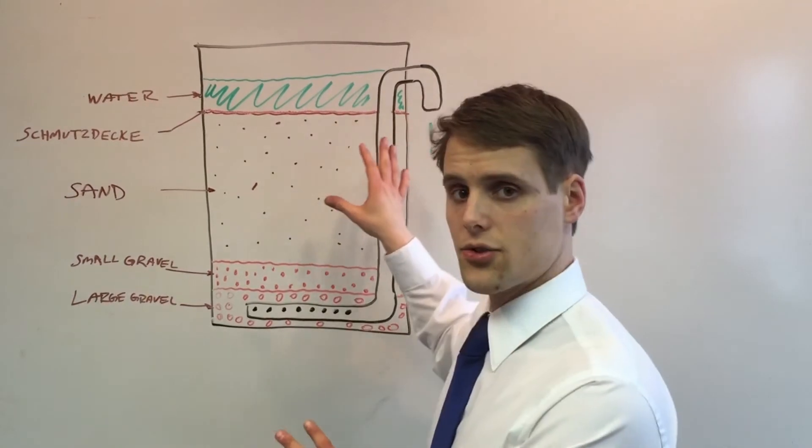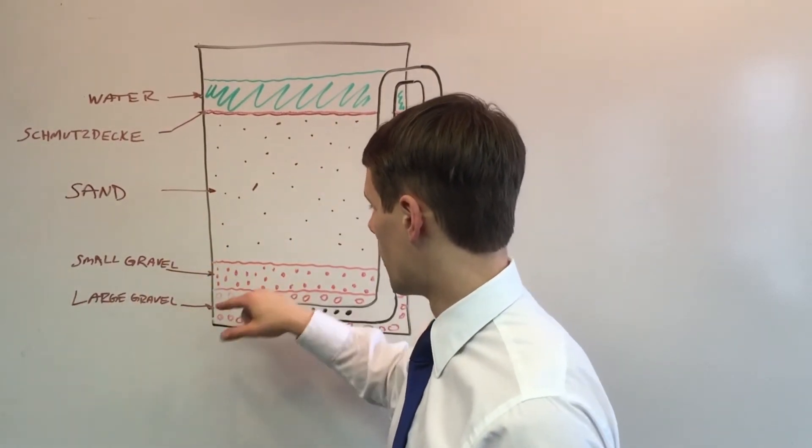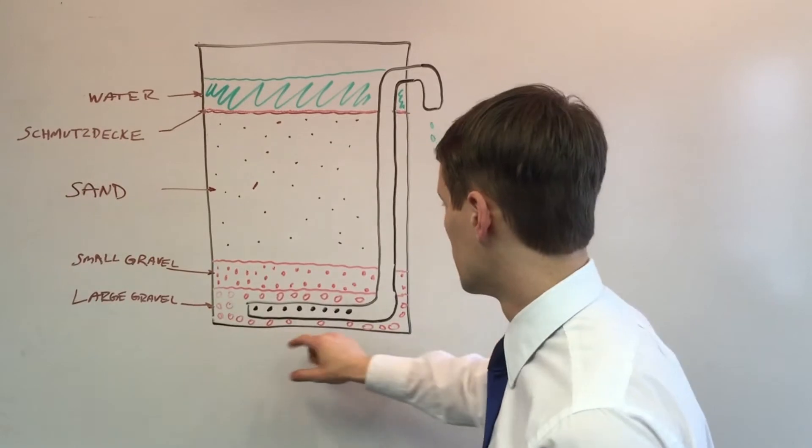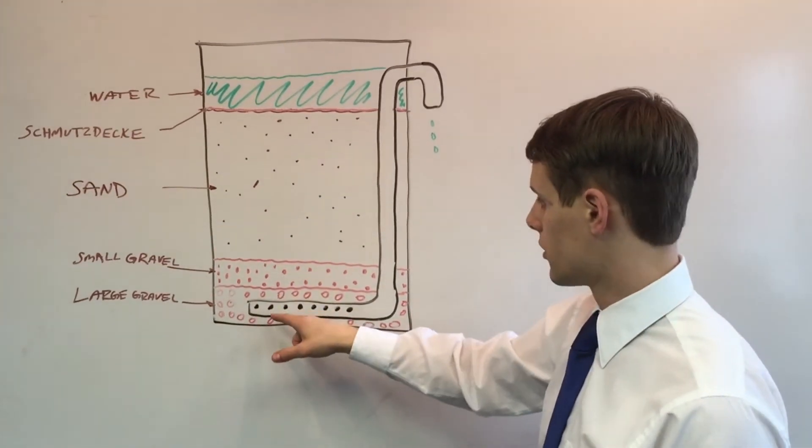So you get a 55-gallon drum and within the drum you place large gravel and within that gravel you put a perforated pipe.